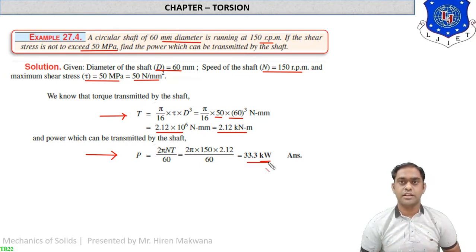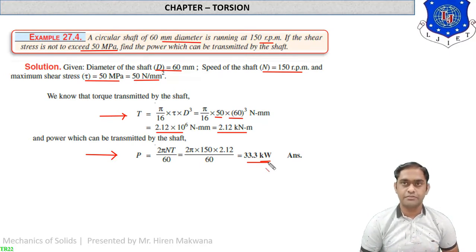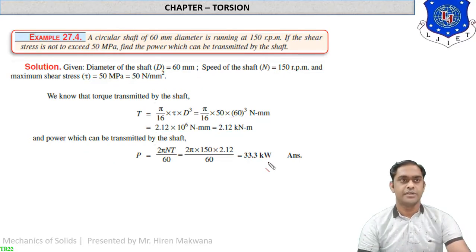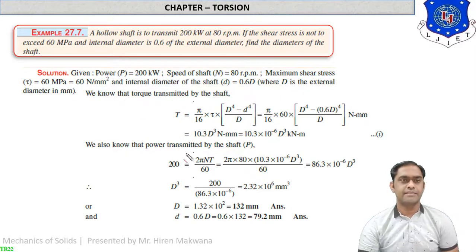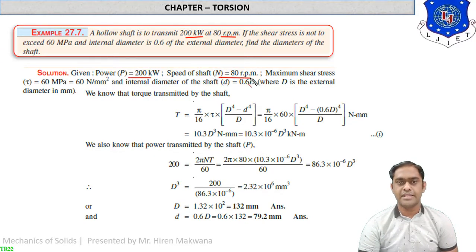This numerical is based on the power capacity of the shaft. Now let us see some more complicated numericals which can be asked in your GTU exam. Example 27.7: A hollow shaft is to transmit 200 kW at 80 rpm — so power P = 200 kW and N = 80 rpm are given.